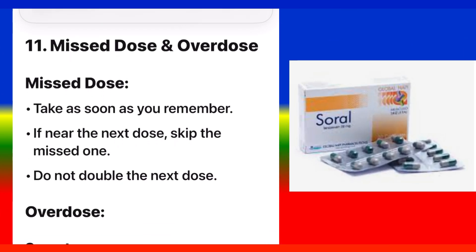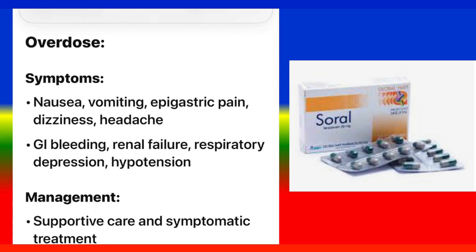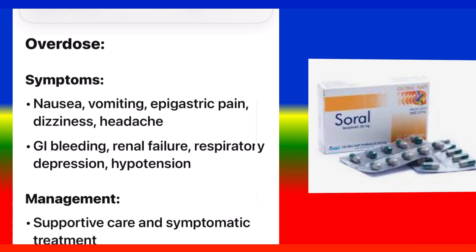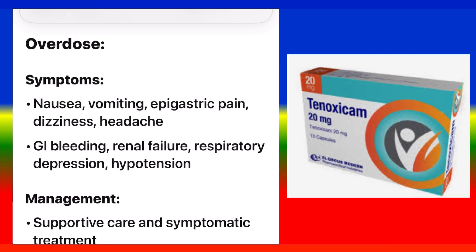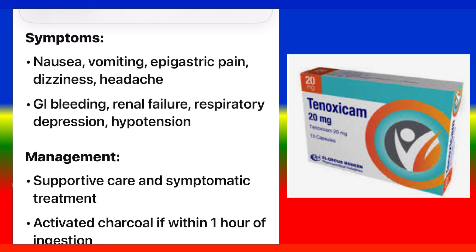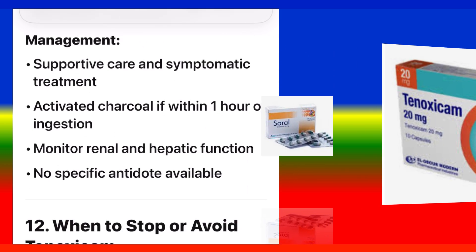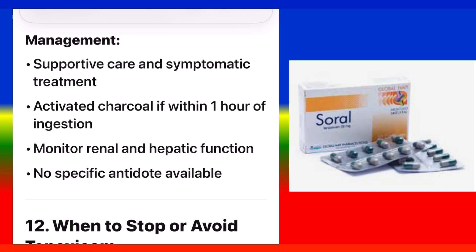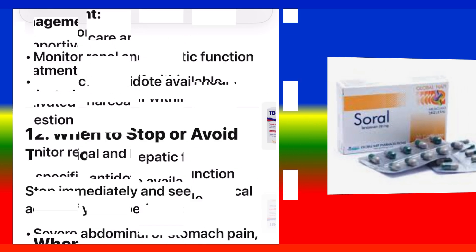Missed Dose and Overdose: Missed dose — take as soon as you remember; if near the next dose, skip the missed one; do not double the next dose. Overdose symptoms include nausea, vomiting, epigastric pain, dizziness, headache, GI bleeding, renal failure, respiratory depression, and hypotension. Management: supportive care and symptomatic treatment, activated charcoal if within one hour of ingestion, monitor renal and hepatic function. No specific antidote is available.